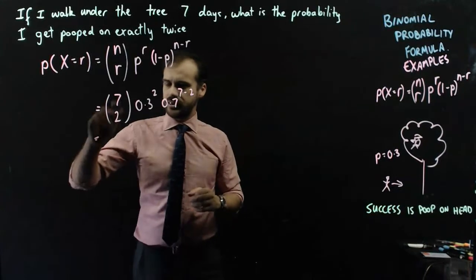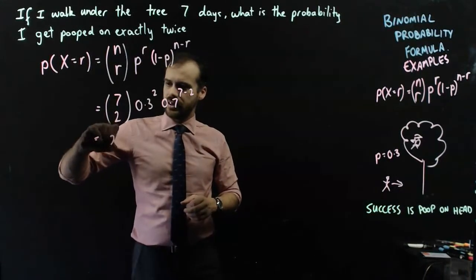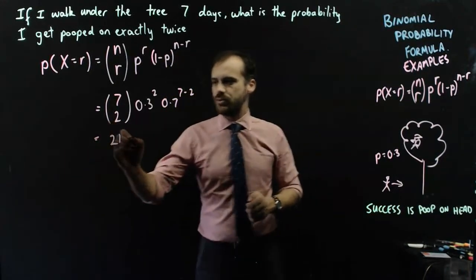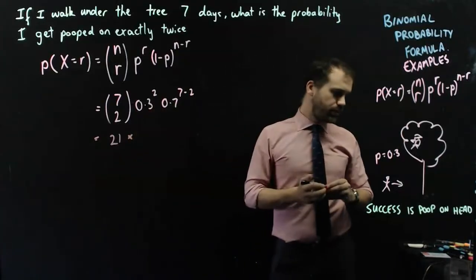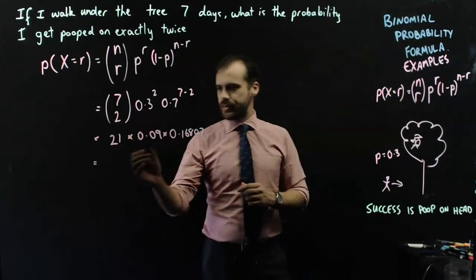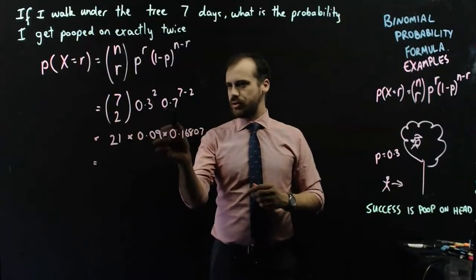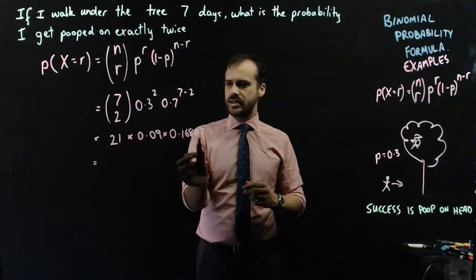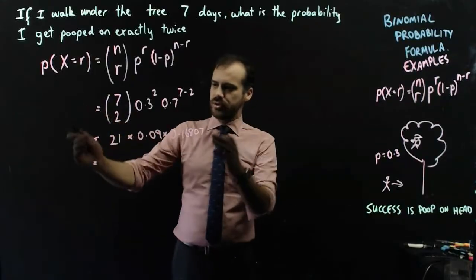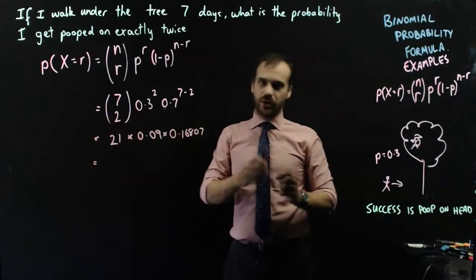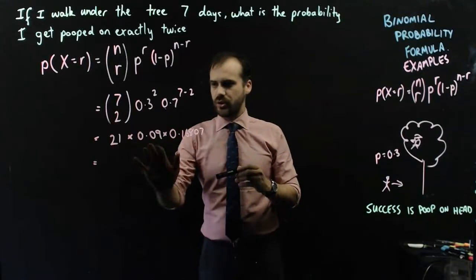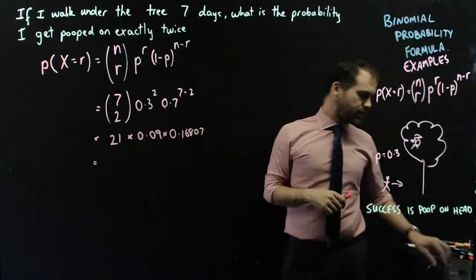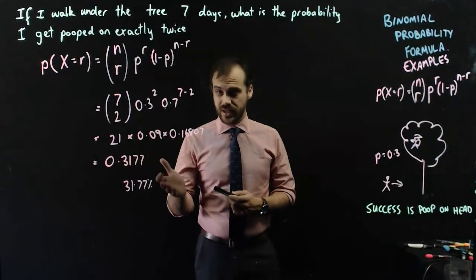We can put that straight into our calculator and get an answer. So you should be able to put that into your calculator as nCr and get 21 times 0.3 squared. That bit's 0.09, and then 0.7 to the power of 5 is 0.16807. You probably don't need to write this line - you can just type the whole thing into your calculator, but I'm showing you that there's three elements multiplied by each other.